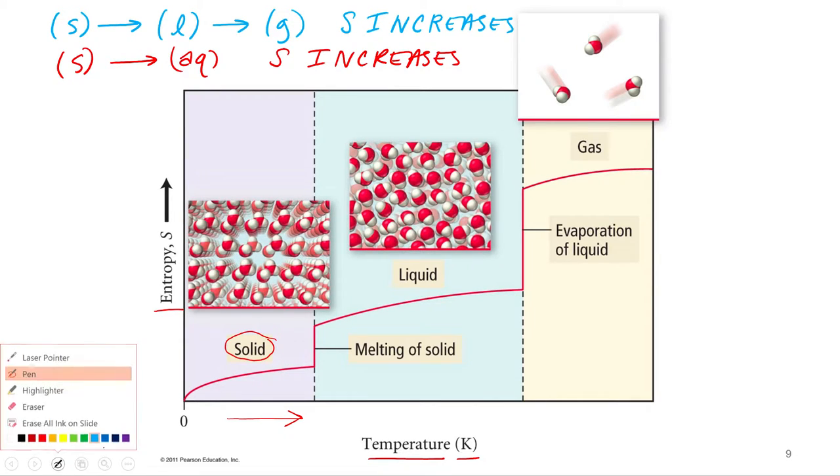So if entropy goes up as temperature goes up, what type of relationship is that? Directly proportional. Directly proportional. So we could even write that a little bit mathematically. Let's go orange. Entropy is proportional to temperature.